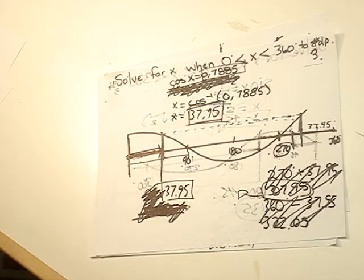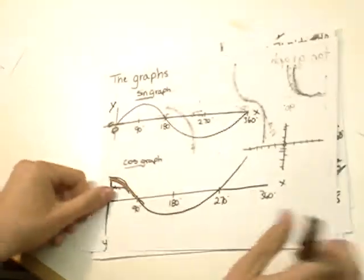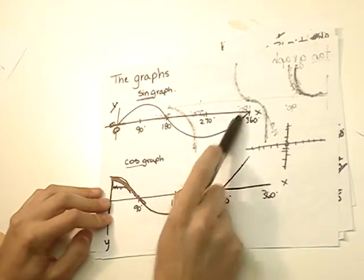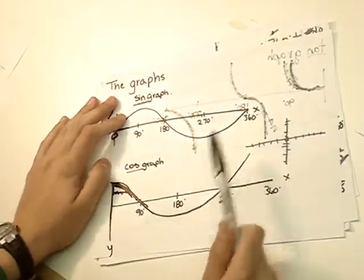If you remember, we looked at the graphs that we used. We'll quickly do a review here. This is the sine graph, starts at 0, 0, curves, touches 180, curves up, hits 360.